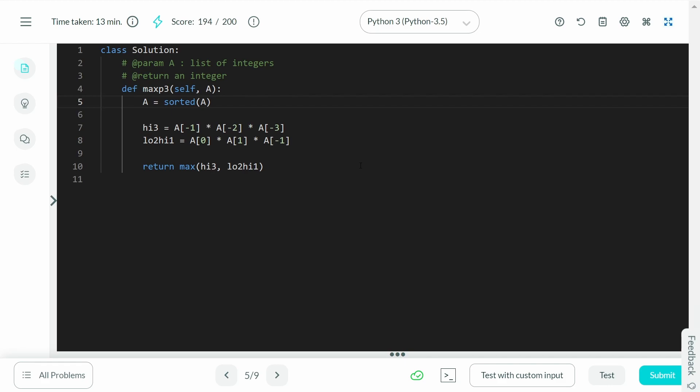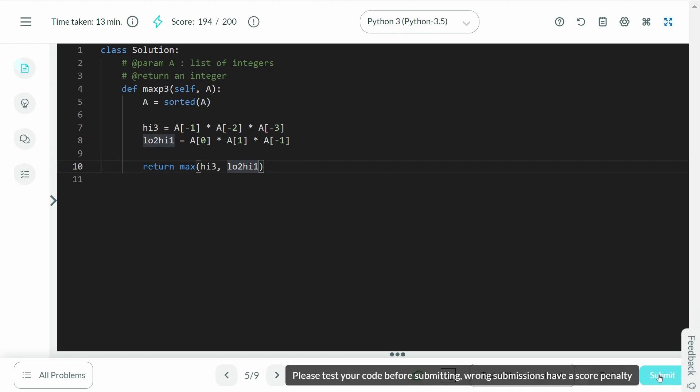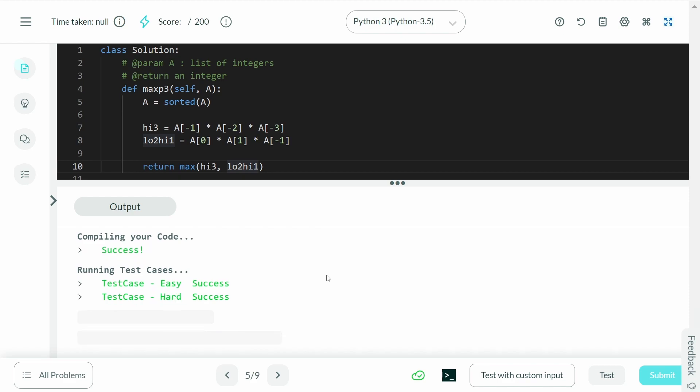Here is the code. As I mentioned, the first step is to sort the array: A = sorted(A), which returns a sorted array in ascending order. On line 7, I have hi3 = A[-1]×A[-2]×A[-3], basically picking the highest 3 elements. Then this is the second case—we pick the two lowest elements, A[0] and A[1], and multiply it with the highest element, A[-1]. The answer can be either of those cases, so we simply return max(hi3, lo2hi1). That's really it for the code. We can submit this and it gets accepted.